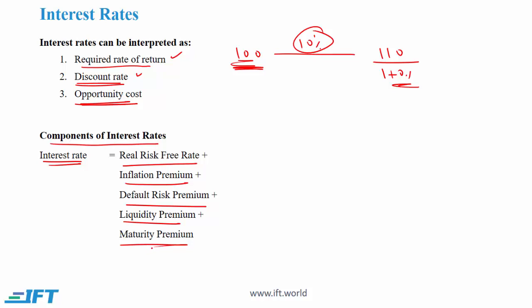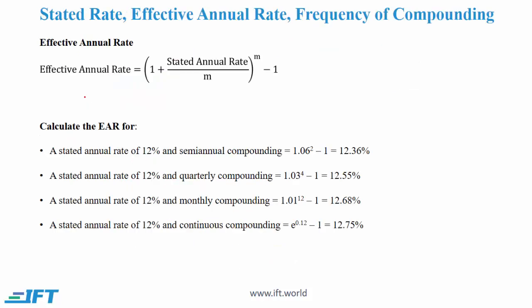Investors prefer short-term securities to long-term securities. There is greater risk associated with longer-term securities and that's why we add a maturity premium. Now to understand this, let's say a company issues a bond and the country where this company operates has a real risk-free rate of 4%. The expected inflation over the upcoming year is 3%. The default risk premium is 2%, which is a premium associated with the risk of default. Let's say that this bond cannot be bought and sold very easily, so we have a liquidity premium of 1%, and this is a 5-year bond. So we have a maturity premium of 1%. If we have all these numbers then the relevant interest rate for this bond will be 11%.